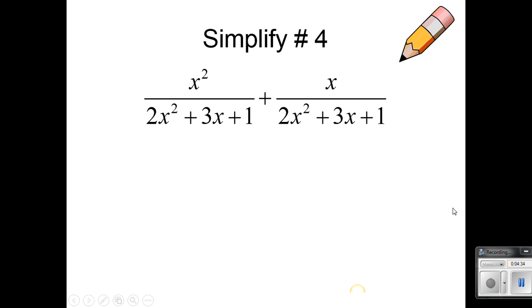Okay. Let's do example number 4 here. Again, I have the same denominator. So what I can do is go ahead and add the top. This would be x squared plus x over 2x squared plus 3x plus 1. I always want to make sure that I can simplify it in the end. So I want to make sure that I know how to factor.